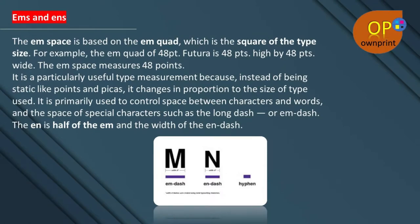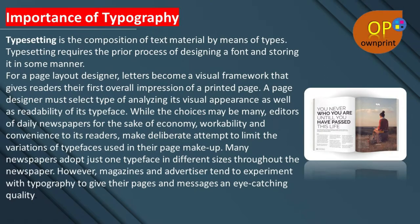The em space is based on the em square, which is the square of the type size. For example, the em square of 48-point Futura is 48 points high by 48 points wide, so the em space measures 48 points. It is a particularly useful type measurement because, instead of being static like points and picas, it changes in proportion to the size of type used. It is primarily used to control space between characters and words, and for special characters such as the long dash or em dash. The en is half of an em, and the width of the en dash.